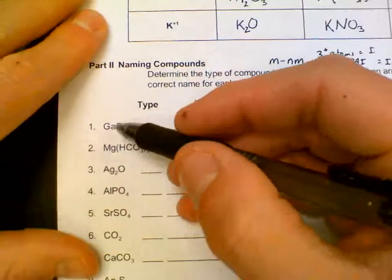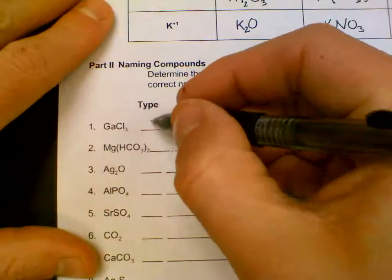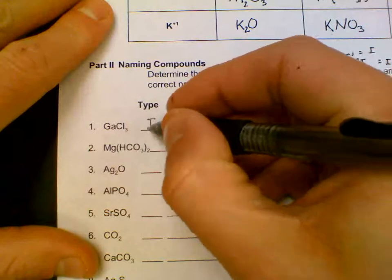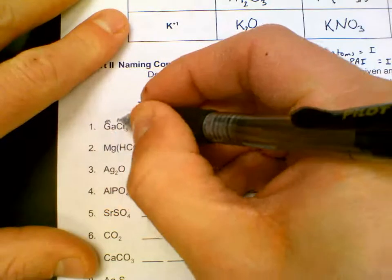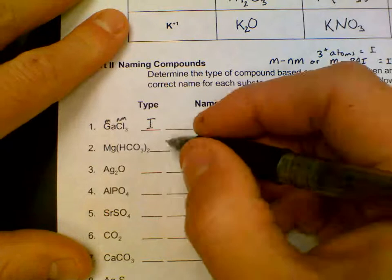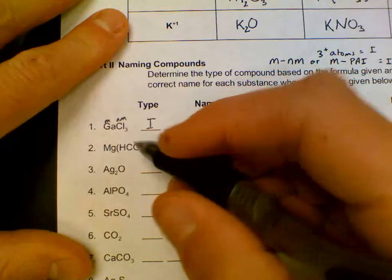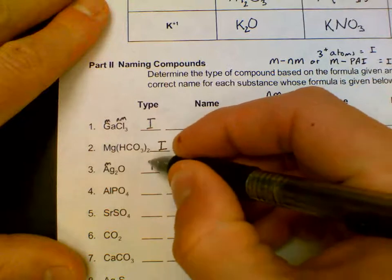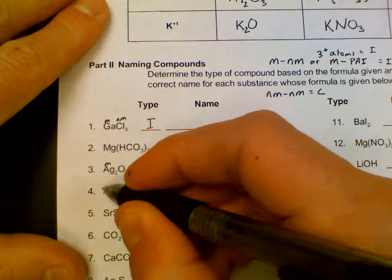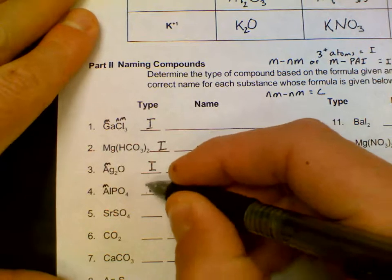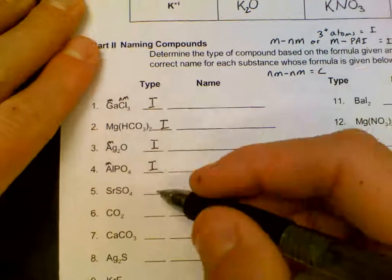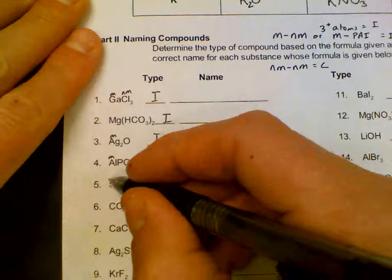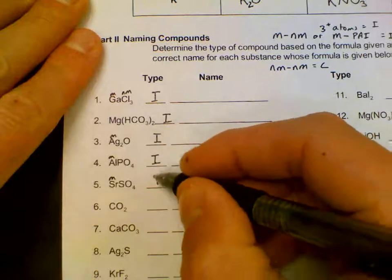So gallium is left of the stair step line, that makes this ionic. It's a metal stuck to a nonmetal. Three or more atoms makes this ionic. Silver is left of the stairs, so that's a metal to a nonmetal, makes this ionic. Aluminum is left of the stairs, that makes it a metal, makes this ionic. Strontium is a metal. Three or more atoms, ionic.